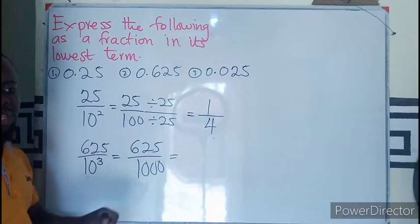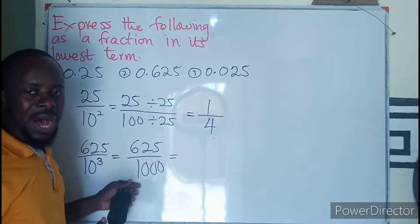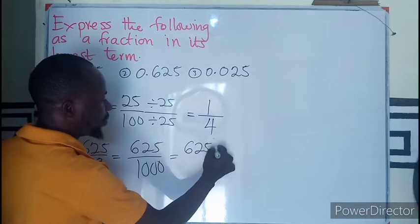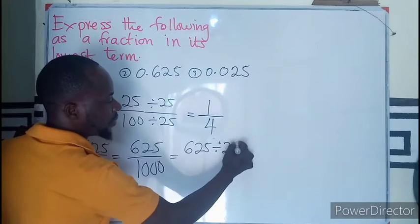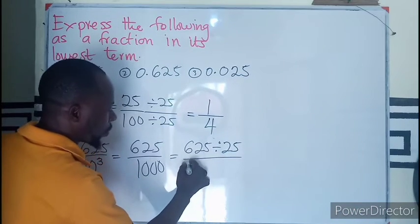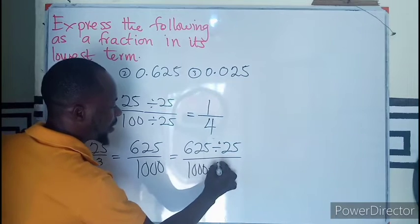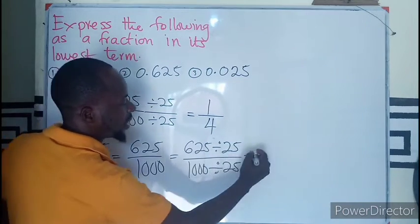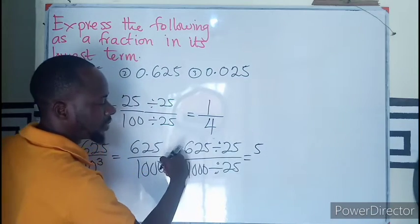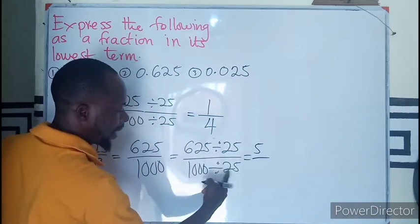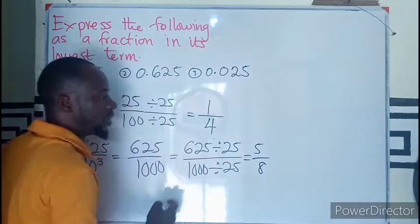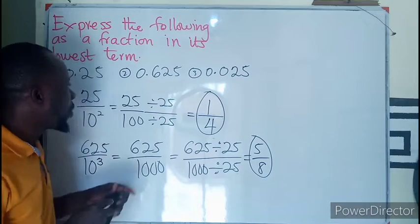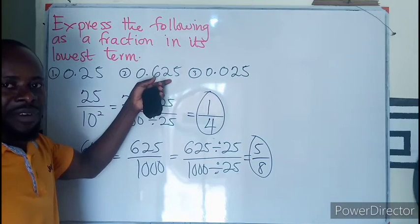The common factor could be 25. So we have 625 divided by 25, and 1000 divided by 25. 625 divided by 25 gives 25, and 1000 divided by 25 gives 40. So 25 over 40 is the proper fraction form of this decimal fraction.